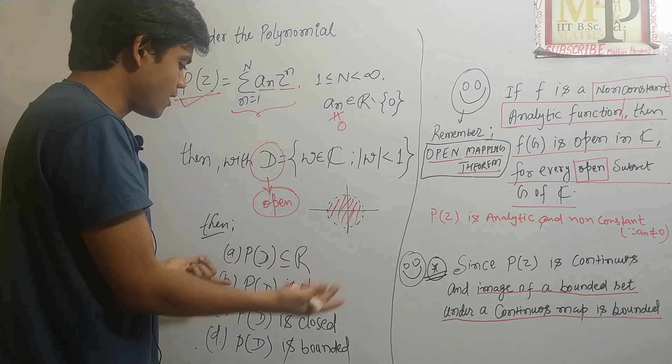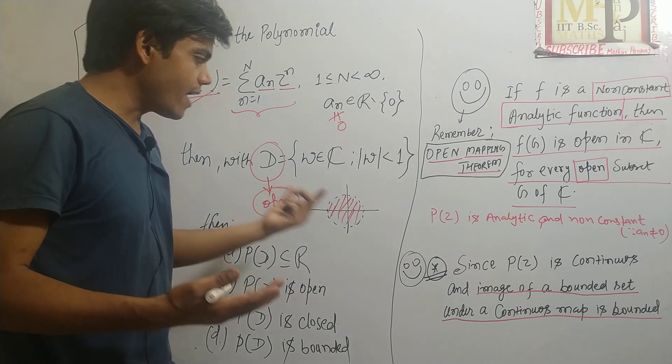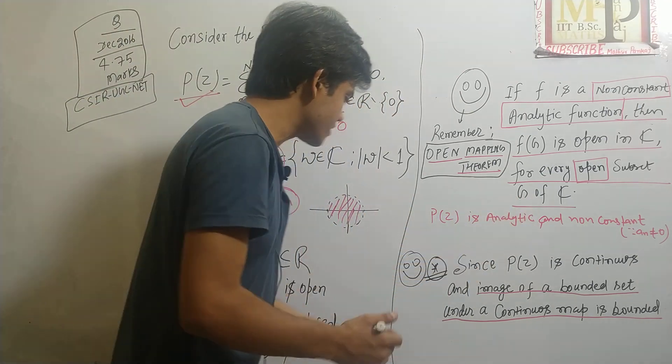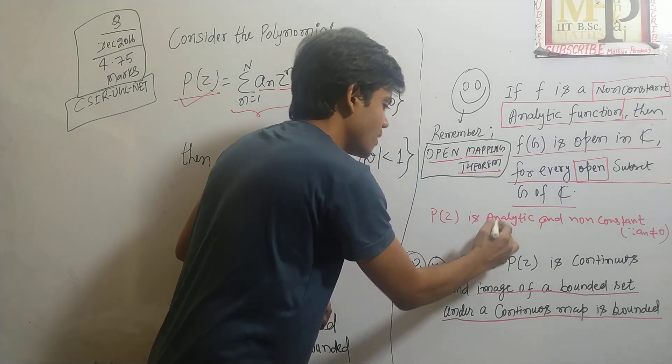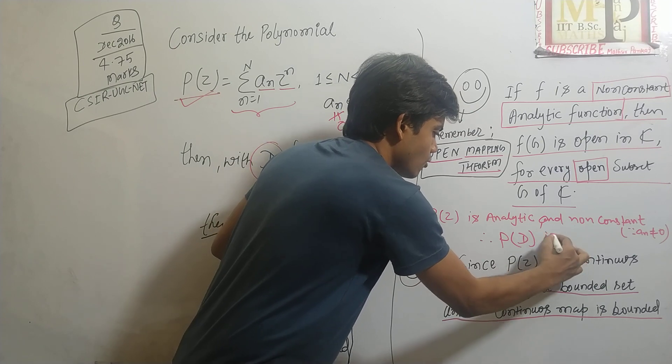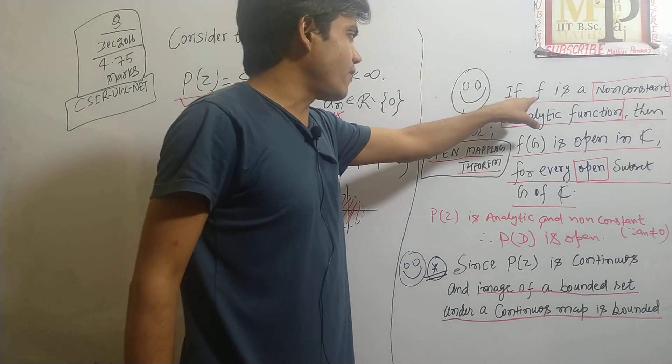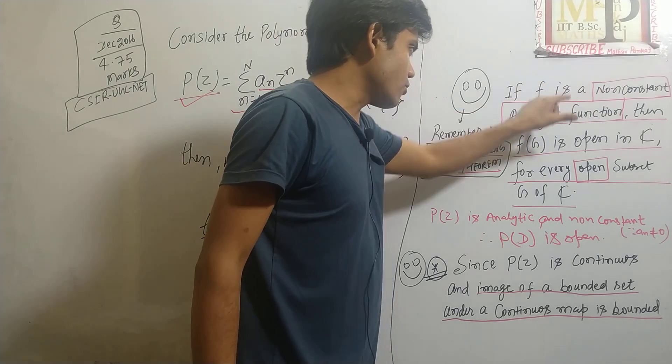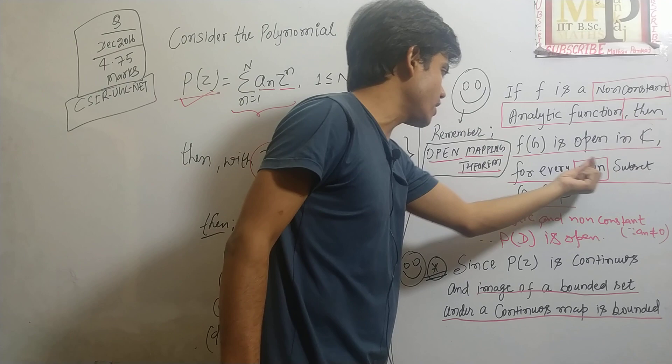So now you don't need to use the pen. You will say as P(z) is non-constant analytic and D is open, therefore from this open mapping theorem P of D is open.